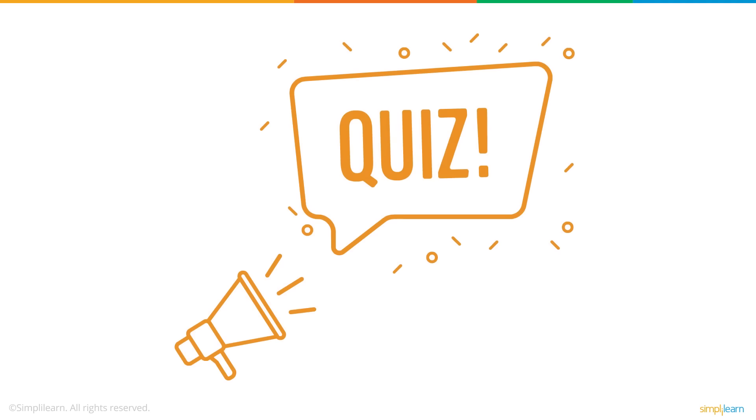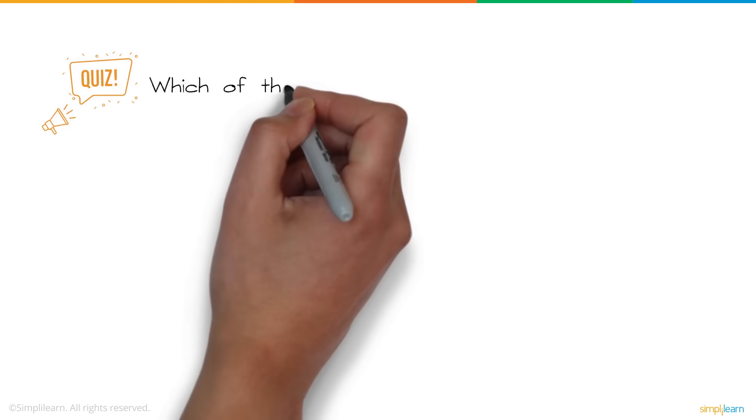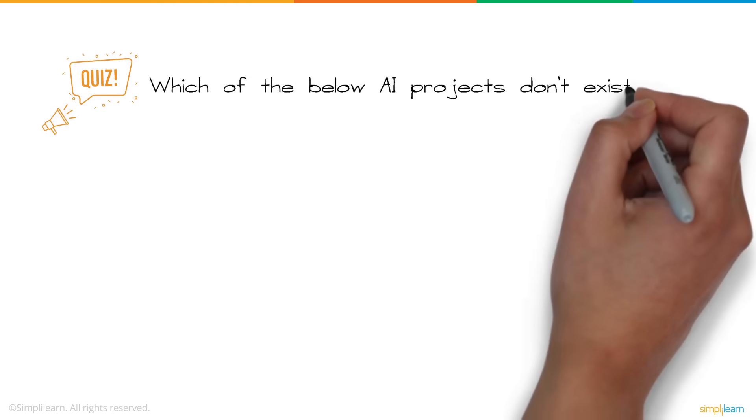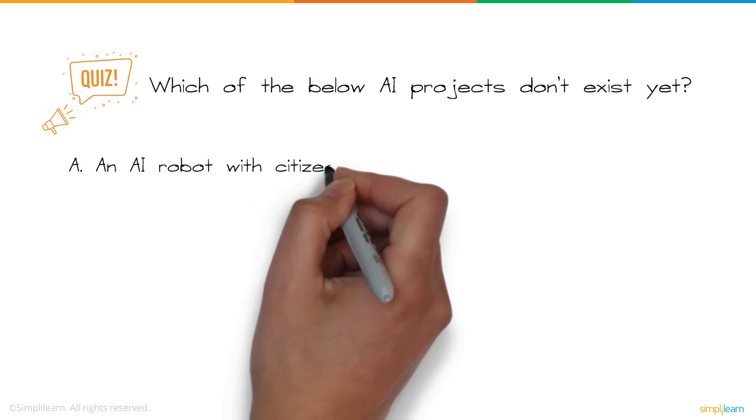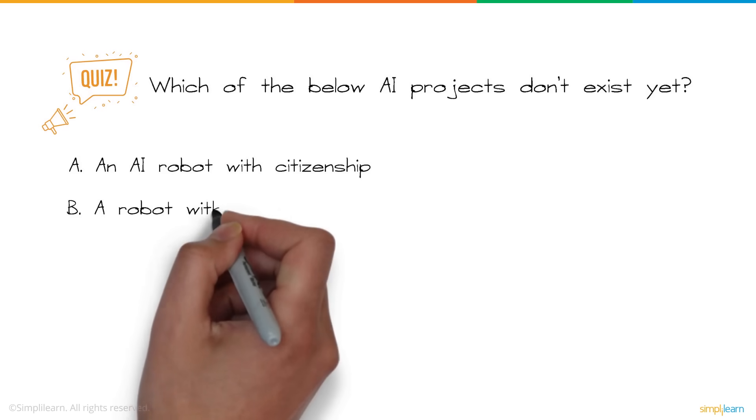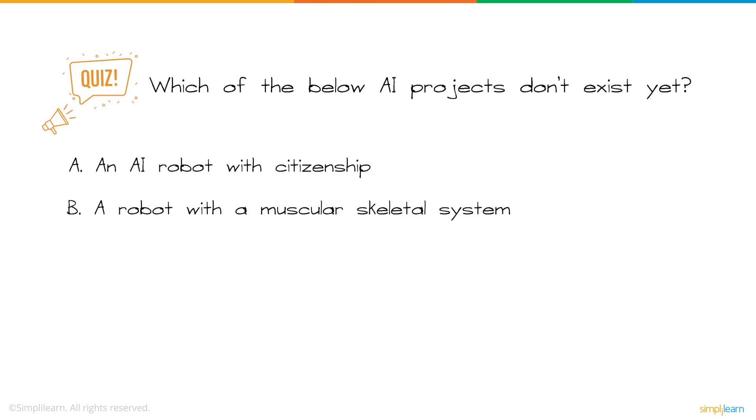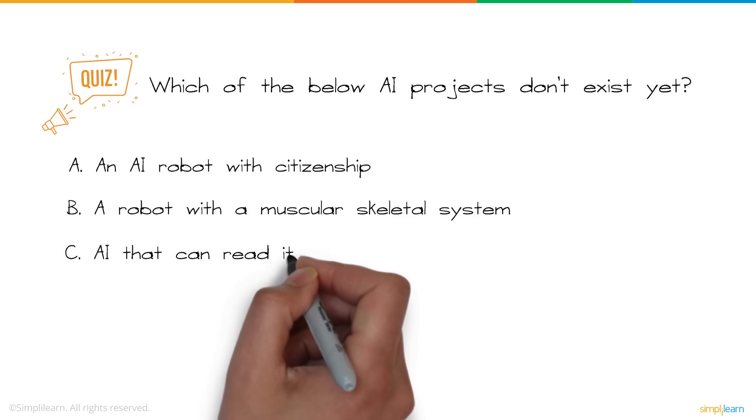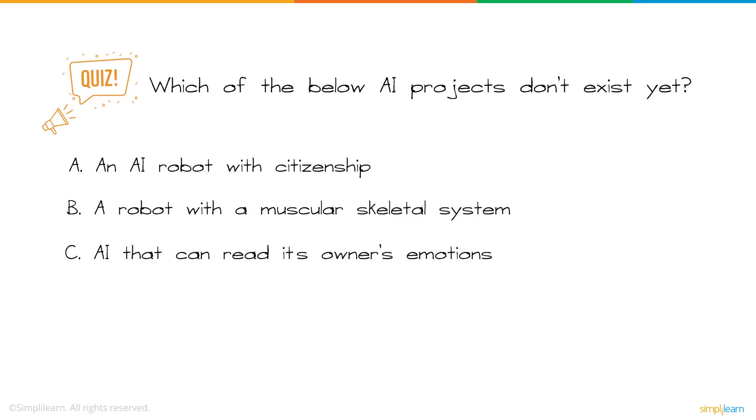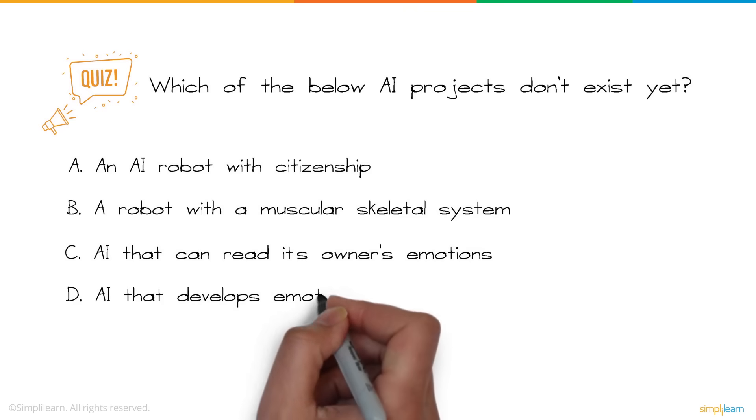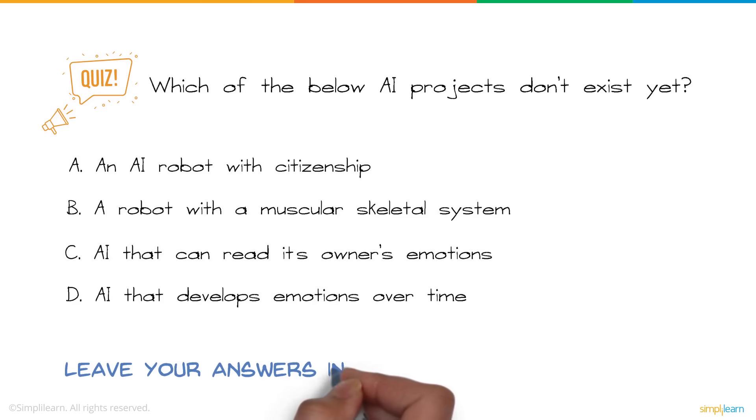So, here's a question for you. Which of the below AI projects don't exist yet? A. An AI robot with citizenship. B. A robot with a muscular skeletal system. C. AI that can read its owner's emotions. D. AI that develops emotions over time. Give it a thought and leave your answers in the comment section below.